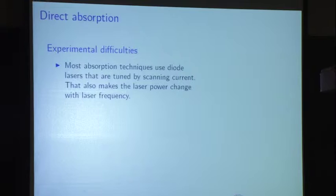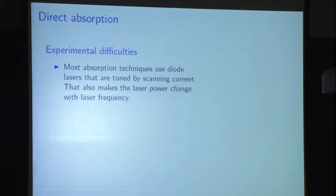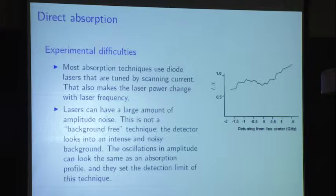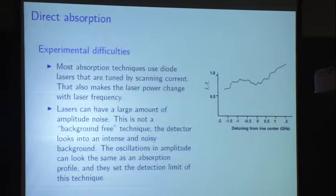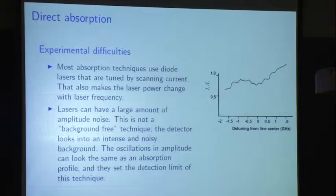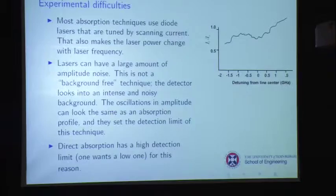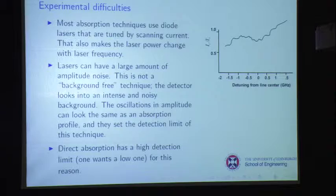Absorption techniques mostly use diode lasers. You tune them by scanning the current, because that changes the laser cavity length. Unfortunately, that also changes the laser power, so you get a vertical scan with the laser power, and there's a large amount of amplitude noise. Your detector is staring straight into these fluctuations in the beam. There are a lot of amplitude fluctuations that can mask an absorption profile as you're scanning. For direct absorption straight across into a detector, the minimum fractional absorption is on the order of 0.05.